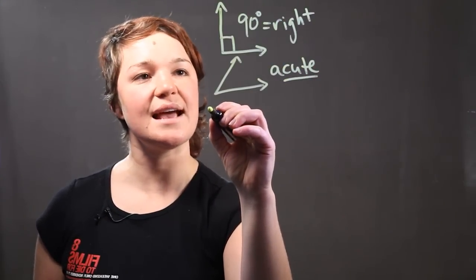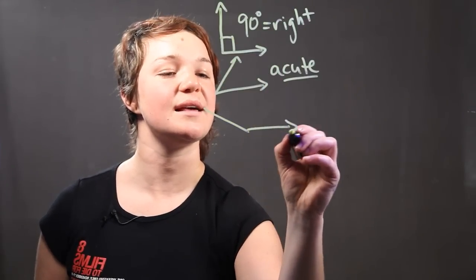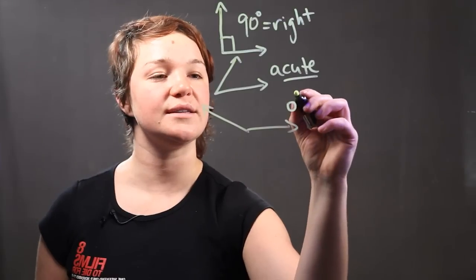Okay, so let's say that you have an angle that's bigger than 90 degrees. It's going to look something like that. And this is called an obtuse angle.